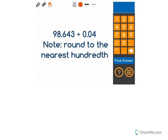This math problem says 98.643 divided by 0.04, and the note is to round to the nearest hundredth for our answer.